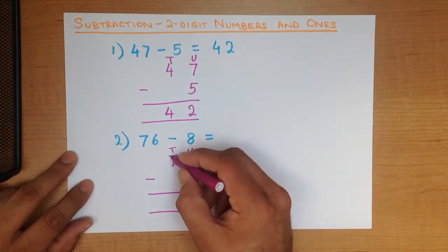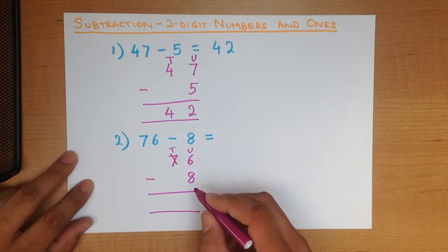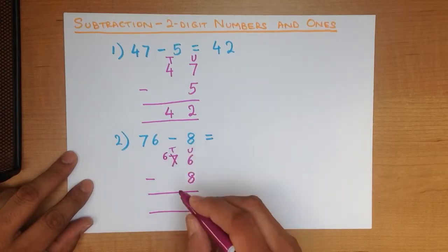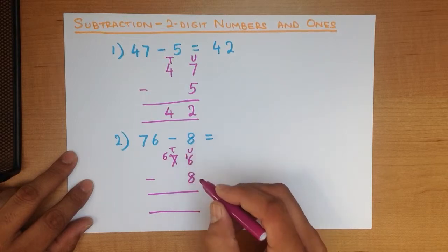What we do is, we cross out the 7. We are going to take 1 from here. So 7 minus 1 is 6. And we put that 1 over here.